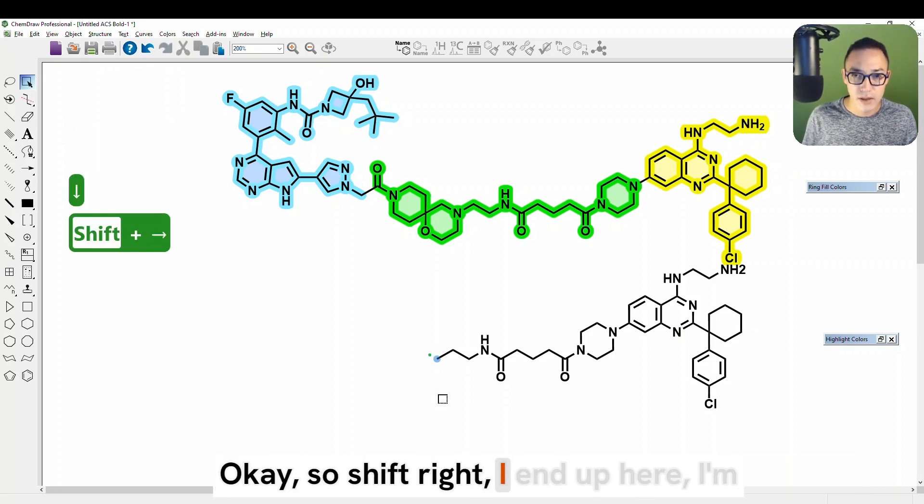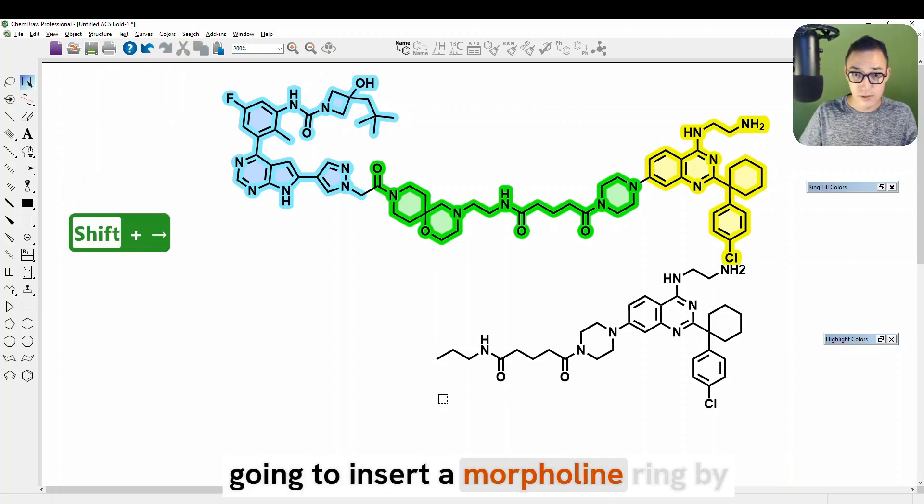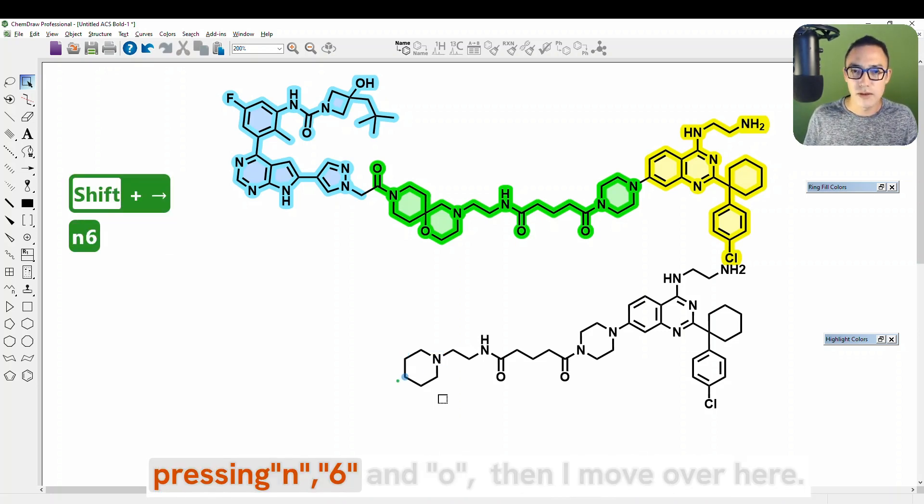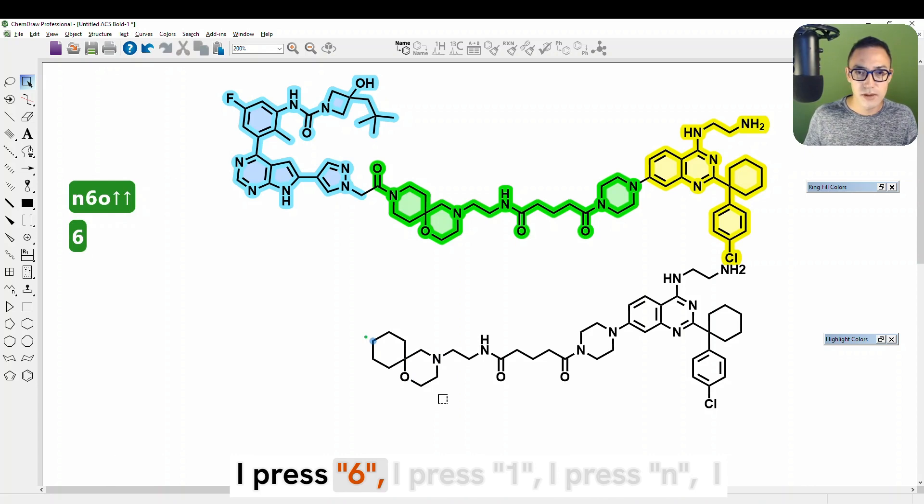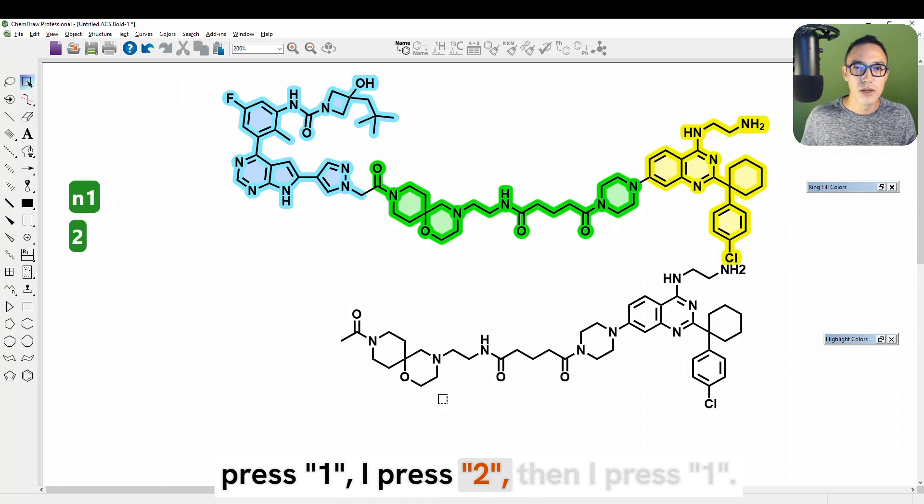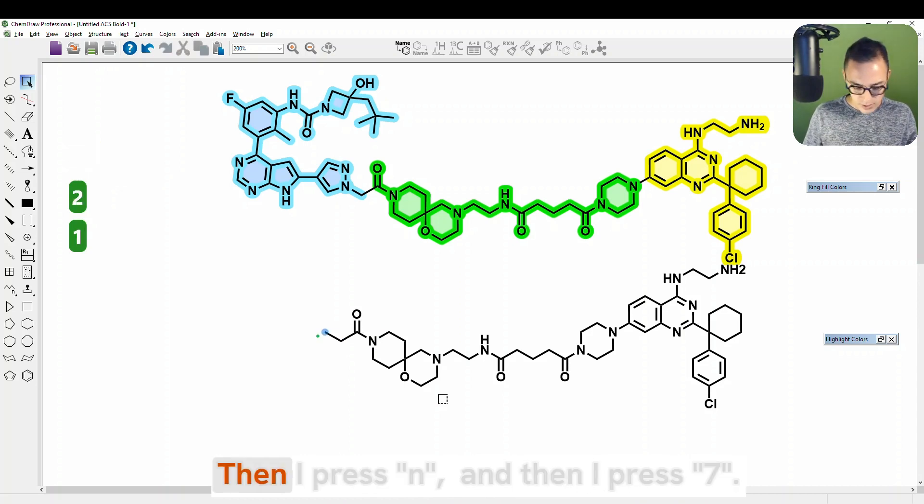Okay, so shift right, I end up here. I'm going to insert a morpholine ring by pressing N, six, and O. Then I move over here, I press six, I press one, I press N, I press one, I press two, then I press one, then I press N, and then I press seven. Seven over an atom is the hotkey for a cyclopentyl.